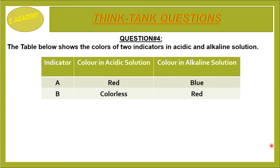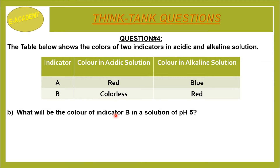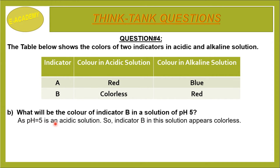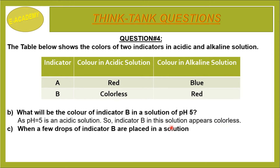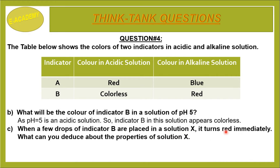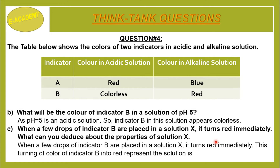Continuing the table: in a solution of pH 5, which is acidic, indicator B is colorless. When a few drops of indicator B are placed in solution X and it turns red immediately, this change of color of indicator B to red indicates that the solution is alkaline or basic.